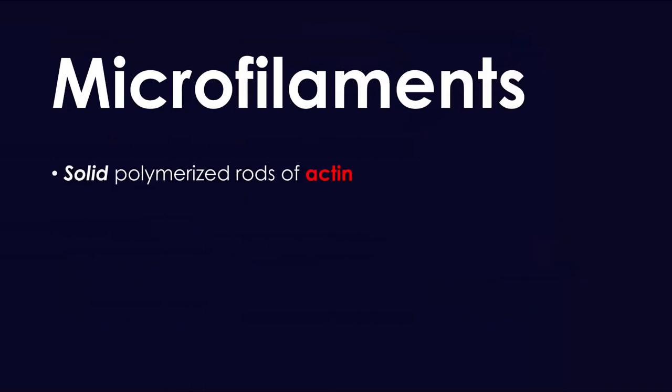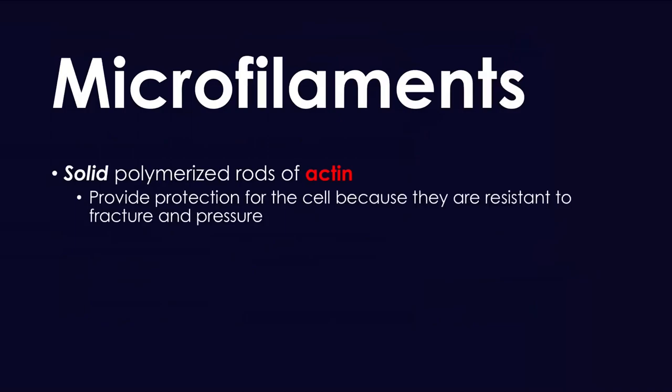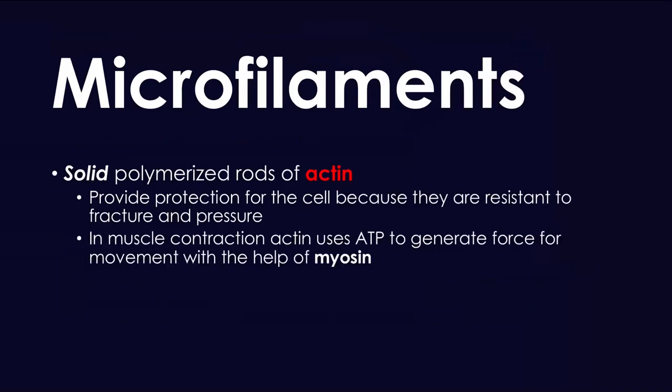Microfilaments, on the other hand, are solid polymerized rods of actin. Microfilaments provide protection for the cell because they're resistant to fracture and pressure. Actin is used in muscle contraction because it can use ATP to generate a force of movement along with the help of myosin.